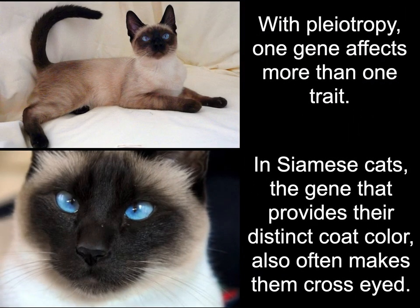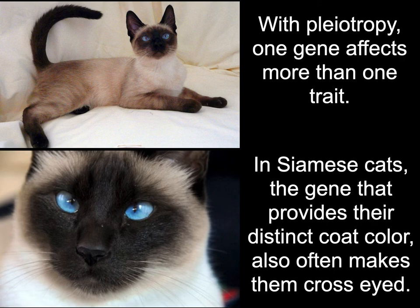Pleiotropy is where one gene affects more than one trait. If we look at Siamese cats, there's a gene that provides the distinct coat color but also makes their eyes crossed — the eyes point inwards. So if they get that coat pattern, they also get those crossed eyes. Some genes are like that.